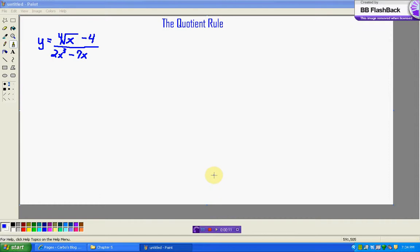This problem that you see on your screen is number 7 from the 2.4, 2.5 review worksheet. I thought this one was a pretty interesting Quotient Rule problem that involved some tough stuff to do. I wanted to make sure that we were all on the same page here.